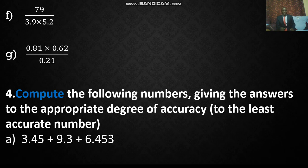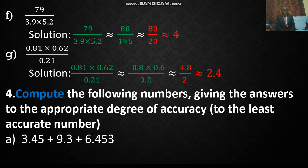Now in this case, 3.9 becomes 4, 5.25 becomes 5. So you get 8 over 20, which is approximately 24. Then you have 0.81 becomes 0.8, 0.62 becomes 0.6, 0.21 becomes 0.2. You might get 4.8 over 2, which is estimated to be 2.4.